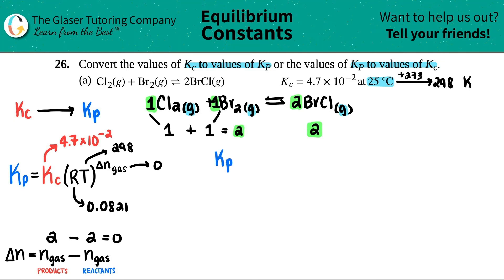And now let's just plug everything in. Kp equals that Kc value, which was the 4.7 times 10 to the negative second. Close that up. Now we're going to do R times T, 0.0821 times the 298. Close that up. And that's raised to the zero.